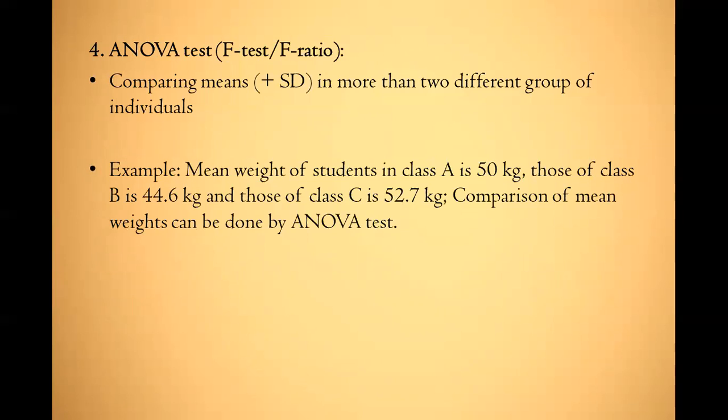Next is the ANOVA test, also called the F-test or F-ratio. It compares the mean in more than two different groups of individuals. For example, if hemoglobin levels in iron deficiency anemia, folic acid deficiency anemia, and hypovolemic anemia are given, the comparison can be done by ANOVA. Another example: if the mean weight of students in classes A, B, and C are given, comparison of these three mean weights is done by ANOVA.